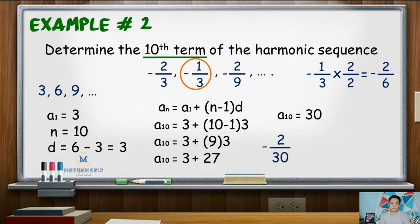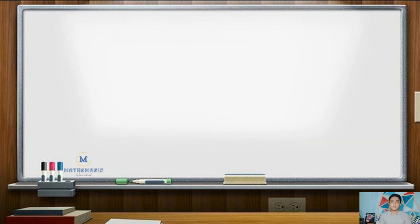Now affix the sign and the numerator, that is negative 2 over 30. Notice that it can still be simplified by dividing both the numerator and the denominator by 2. Hence, the 10th term for this harmonic sequence is negative 1 over 15.